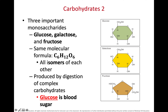Glucose, fructose, and galactose are monosaccharides — they are one sugar molecules. Something interesting is that they all have the exact same chemical formula; they are all isomers of each other. They are one subunit sugars used as energy sources in our bodies. Glucose is that preferred blood sugar — the one we use for energy more than any other sugar.